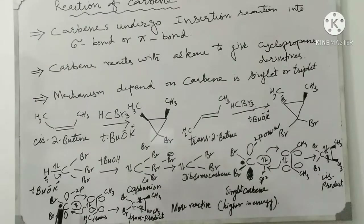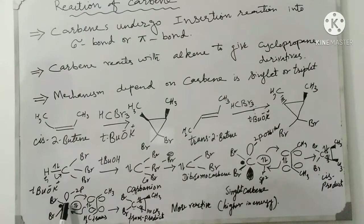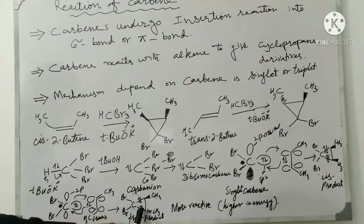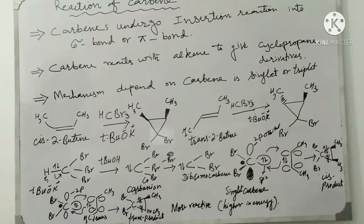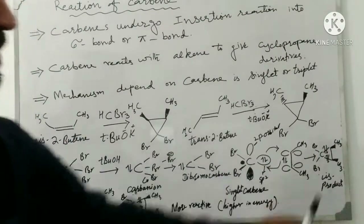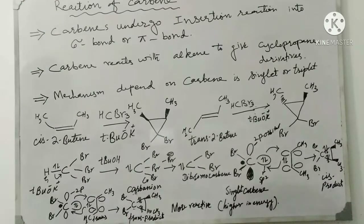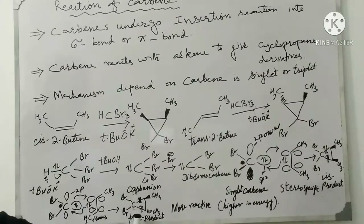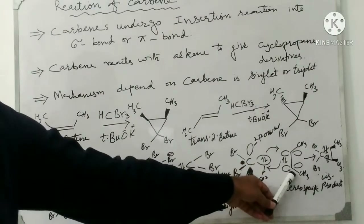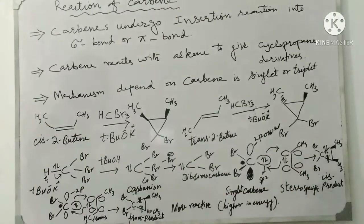Here is the reaction of trans-2-butene with dibromocarbene. This is again the same concerted reaction in a single step. It forms the new sigma bond, and both electrons with opposite spin make the new bond. The stereochemistry of the reactant is preserved in the product — trans gives the trans product, whereas the cis-alkene gives the cis-cyclopropane derivative. This is called stereospecific.